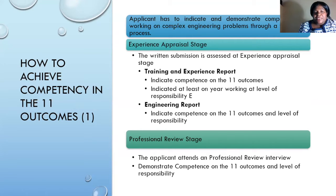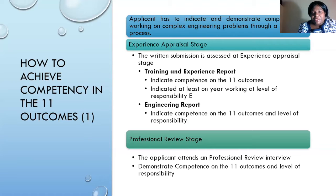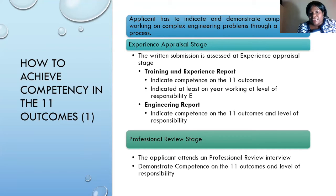For one to achieve competence in the 11 outcomes, one is assessed in two stages: the Experience Appraisal (EA) stage and the Professional Review (PR) stage. During the EA stage, you submit a Training and Experience Report (TER), in which you need to indicate competence in the 11 outcomes. You also need to show at least one year of working at a degree of responsibility E.